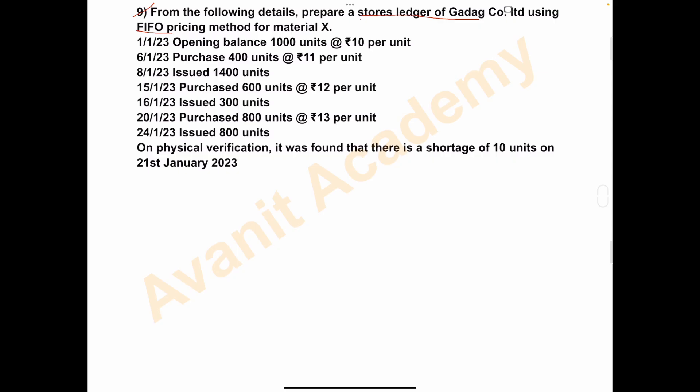The data is: Opening Balance 1000 units at Rs. 10 per unit. Purchases 400 units at Rs. 11 per unit. Issued 1400 units. Purchased 600 units. Issued 300 units. Purchased 800 units at Rs. 13 per unit. Issued 800 units. And on Physical Verification, it was found that there is a shortage of 10 units on 21st January 2023. All these entries we have to record in the store ledger under FIFO method. This is a 10-mark problem. Let's start the solution.